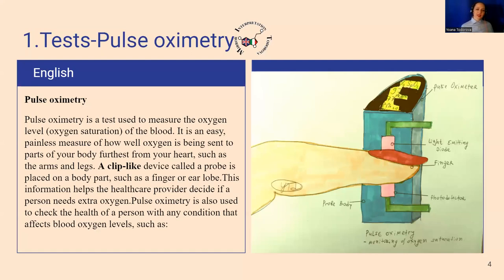Pulse oximetry is a test used to measure the oxygen level or saturation of your blood. It is an easy, painless procedure — a small device that they clip usually on your finger to measure how well oxygen is being sent to parts of your body far away from your heart, such as arms, legs, and sometimes on the ear lobe.